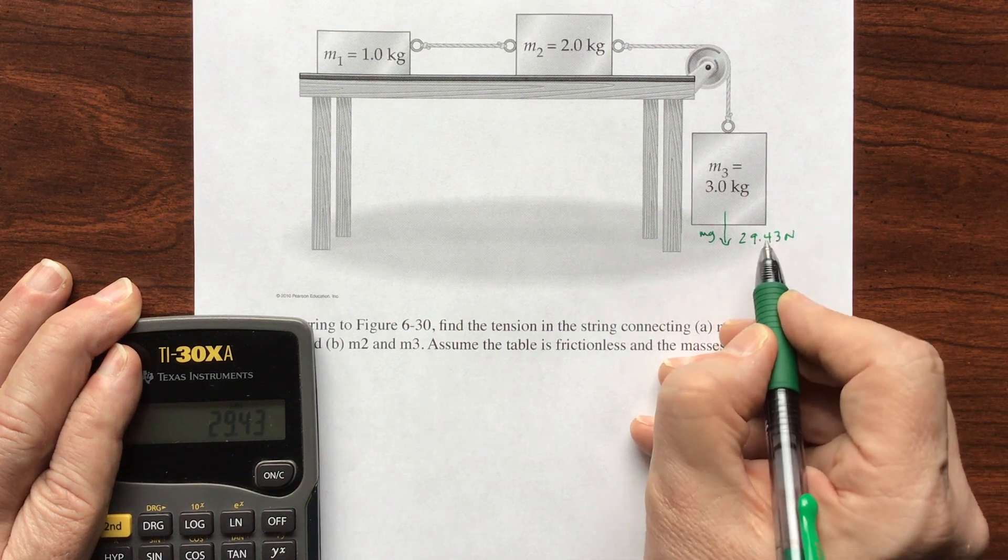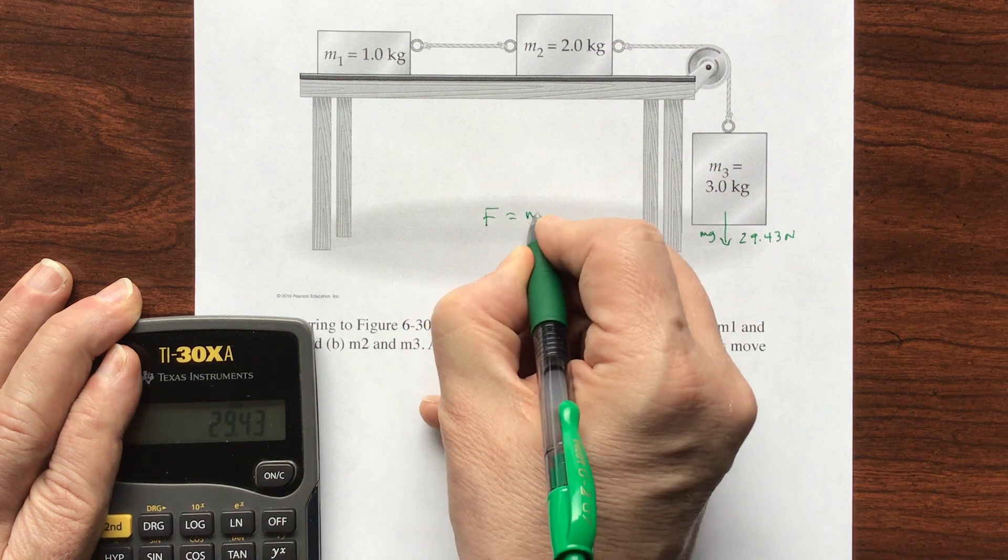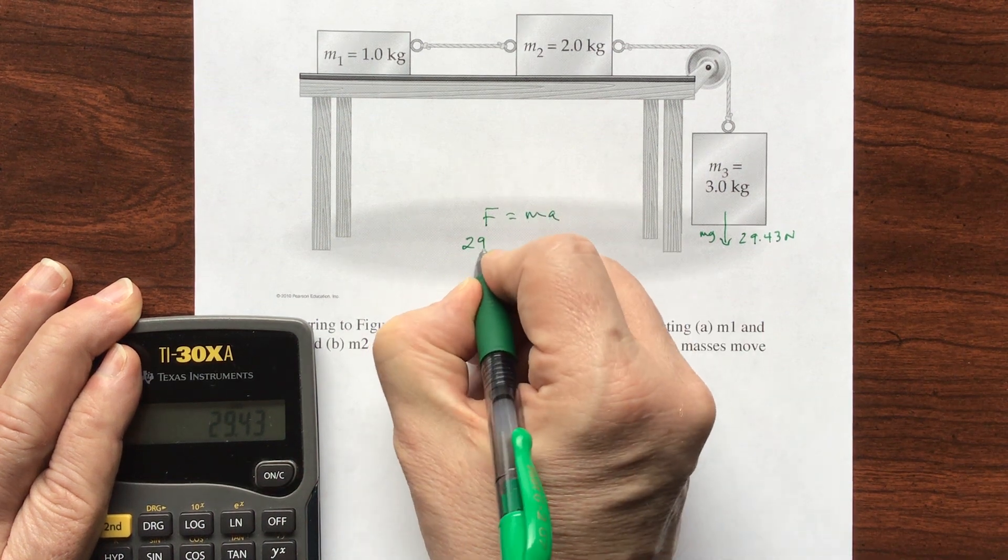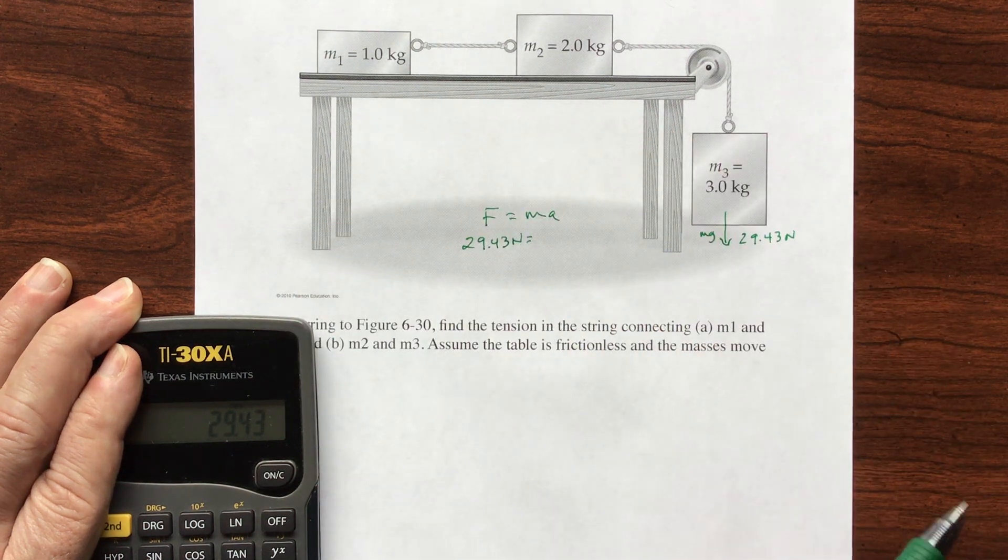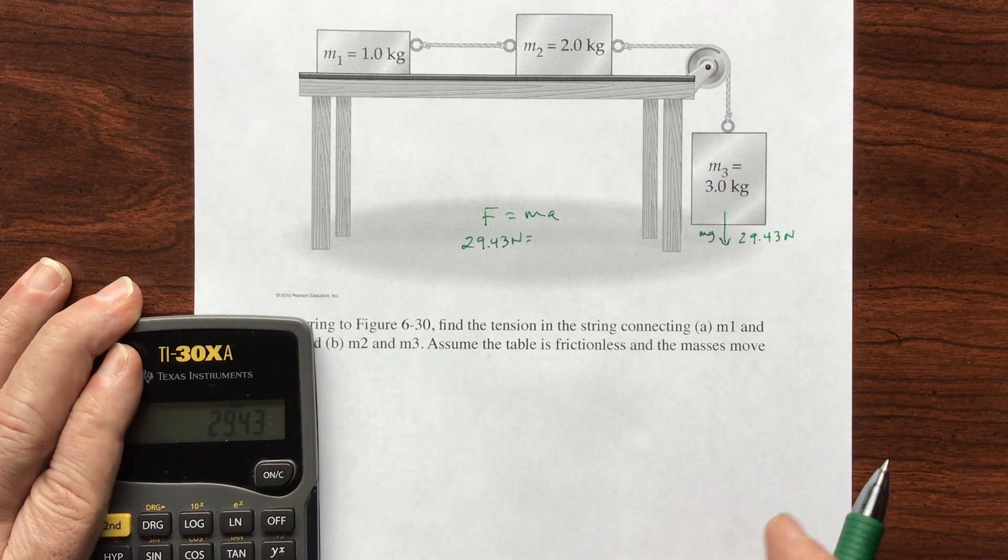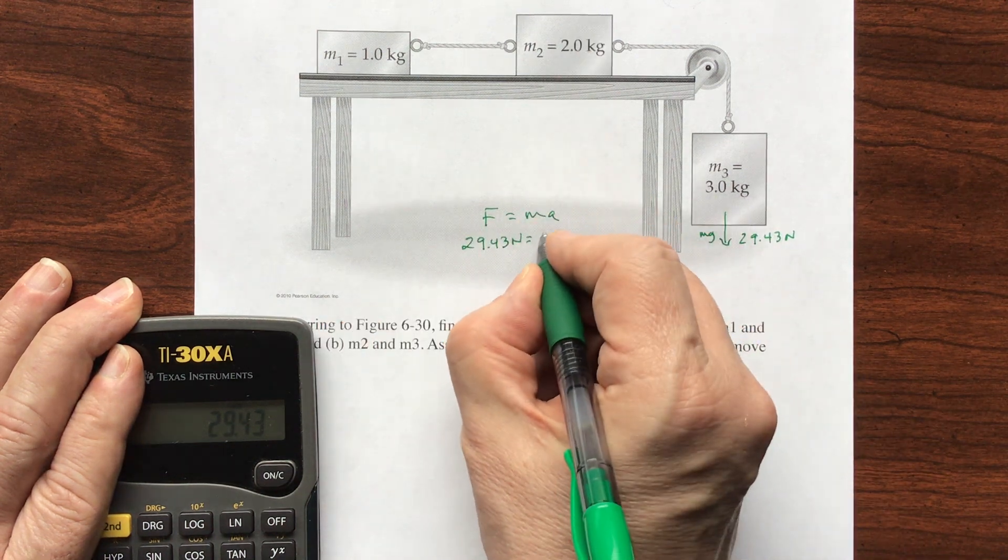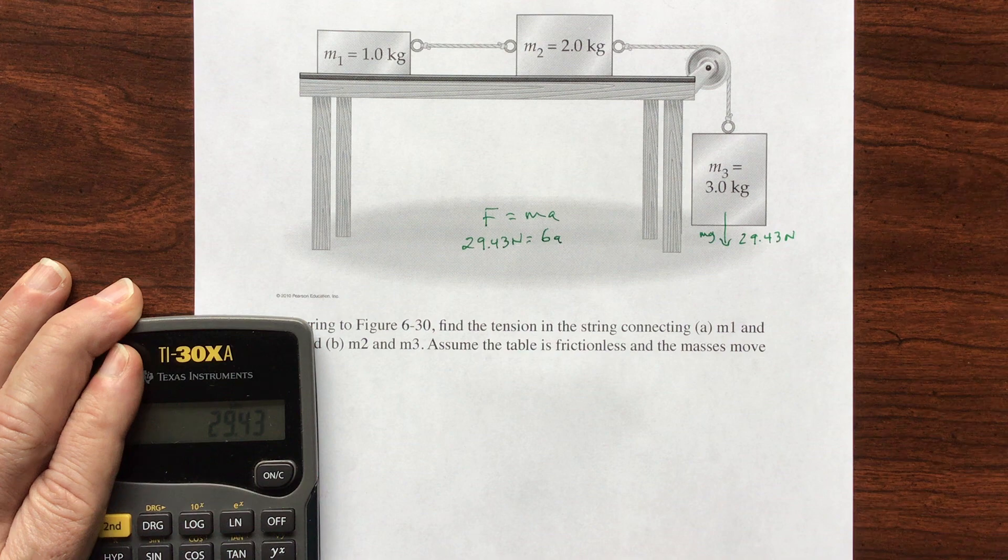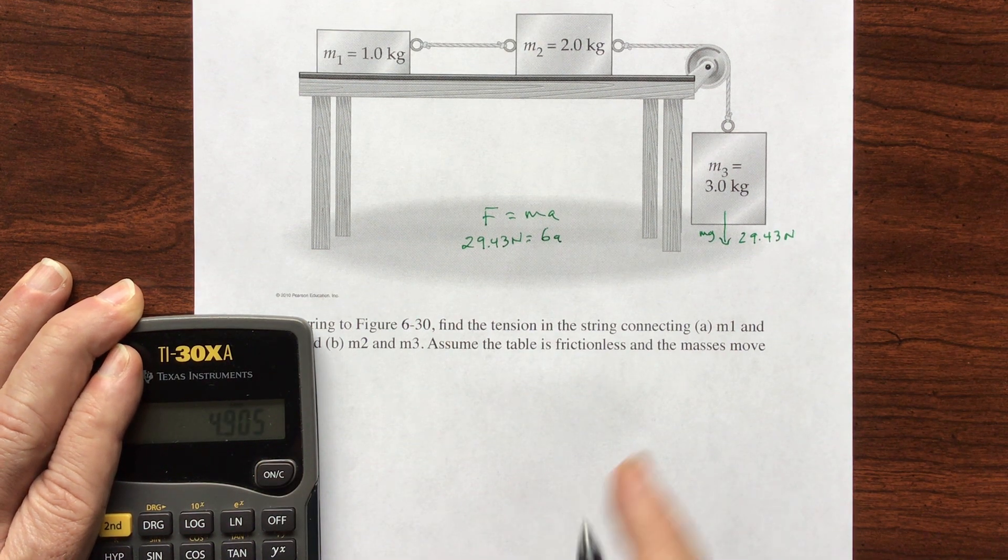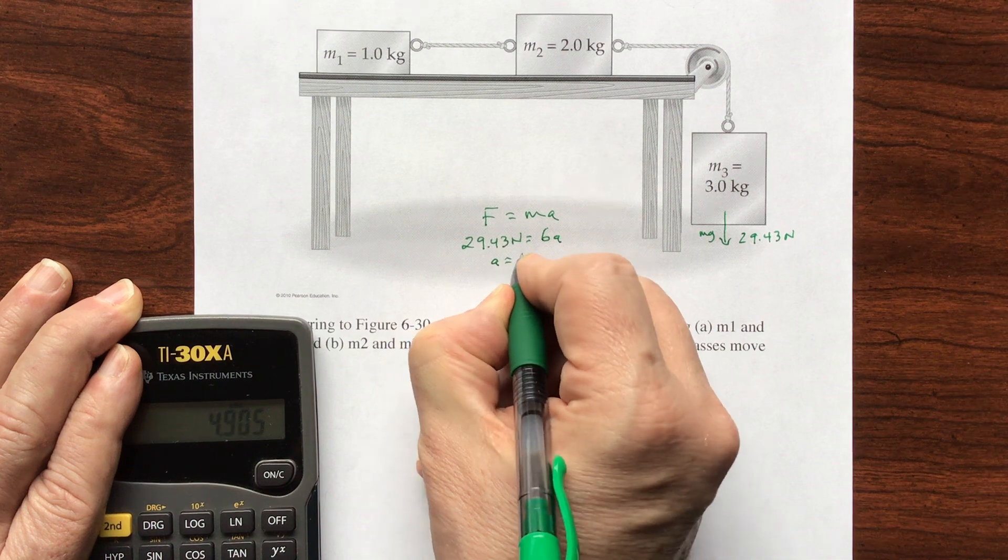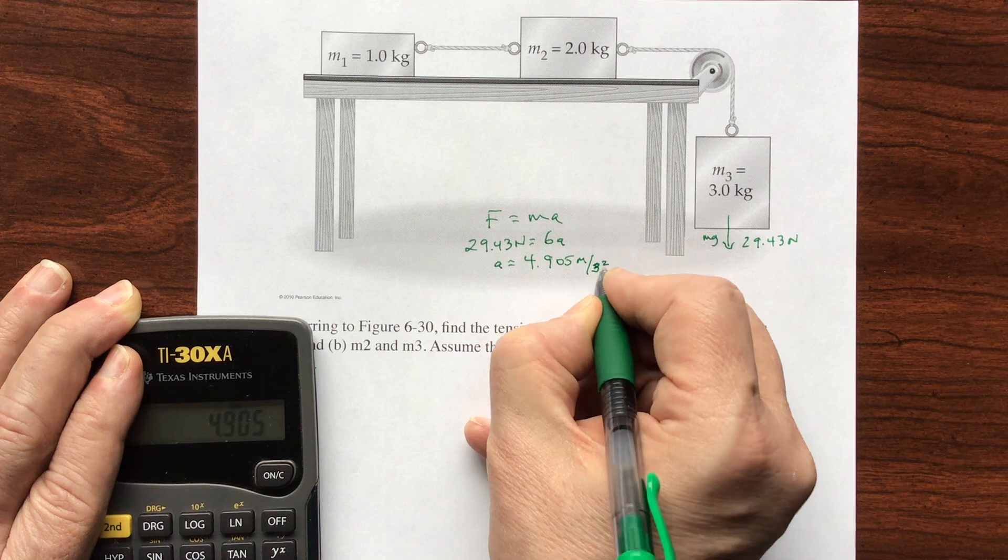So let's take this as our force, we'll do a Newton here. So we have 29.43 newtons. Now all of my blocks together are moving, so all of them are counted as M. So this is 6a, so I'm going to divide 29.43 divided by 6, and I get a as 4.905 meters per second squared.